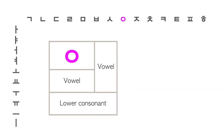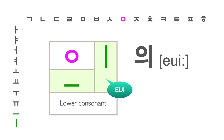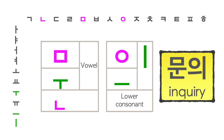Now we return to the consonant 이응. This horizontal line is the vowel 으, and this vertical line is the vowel 이. When these two vowels are used together, this compound vowel sounds 의. The first letter is 문, the second letter is 의 — together it is pronounced 문의.